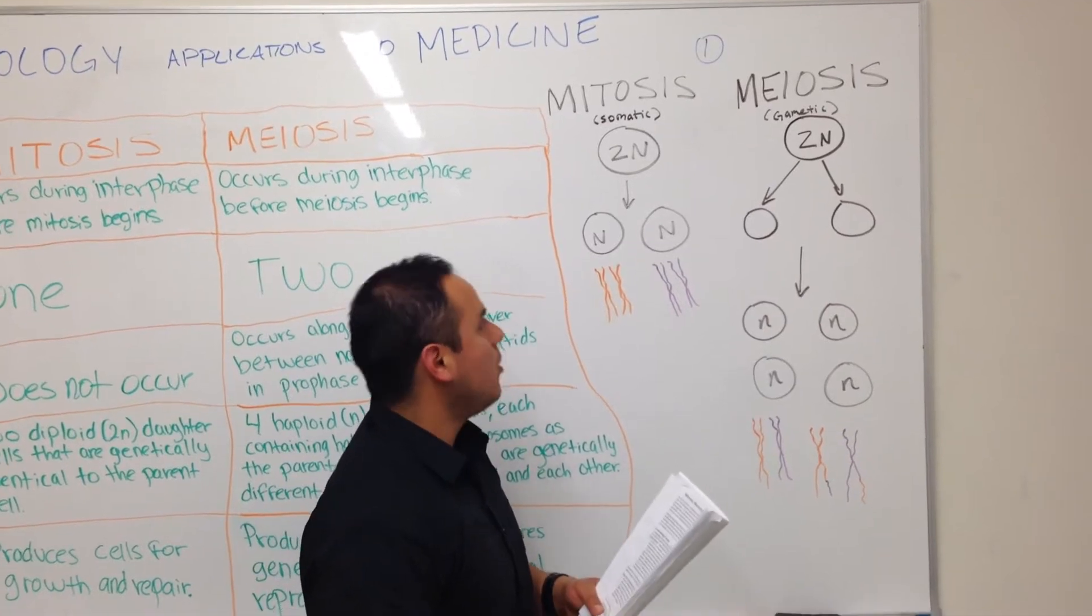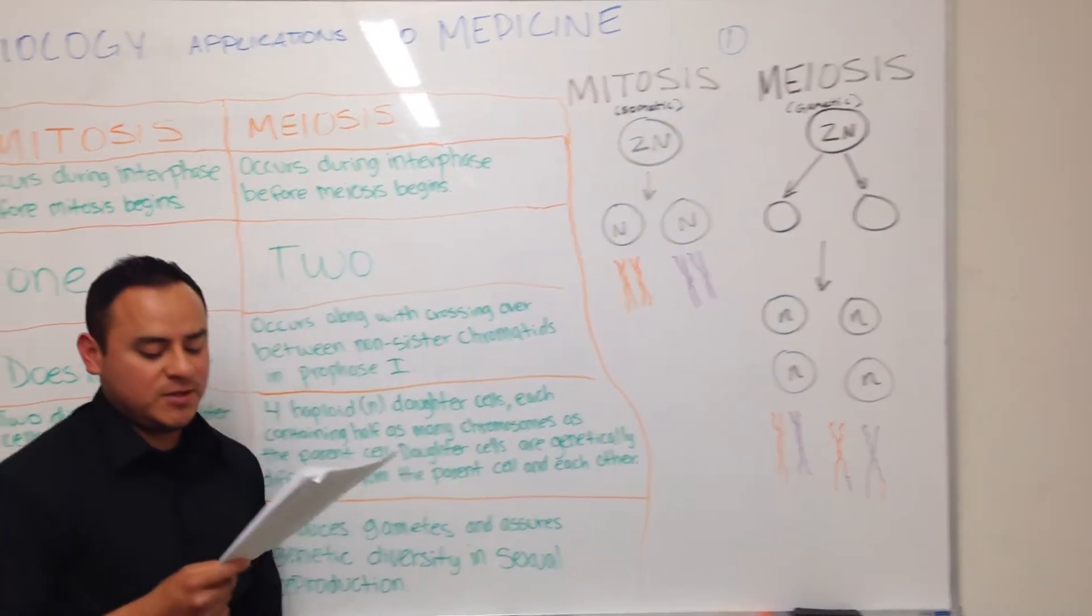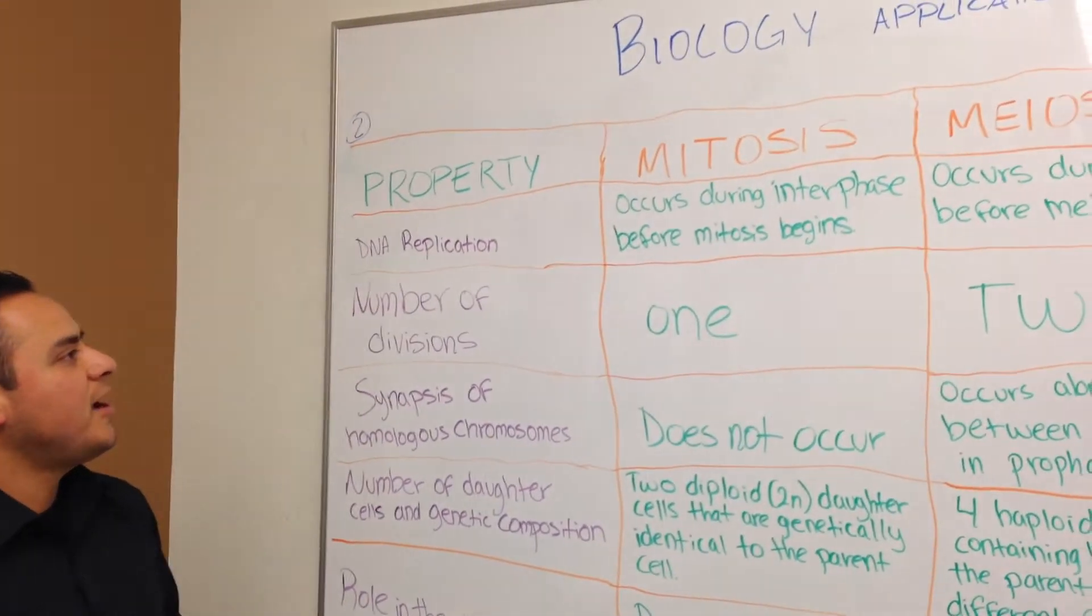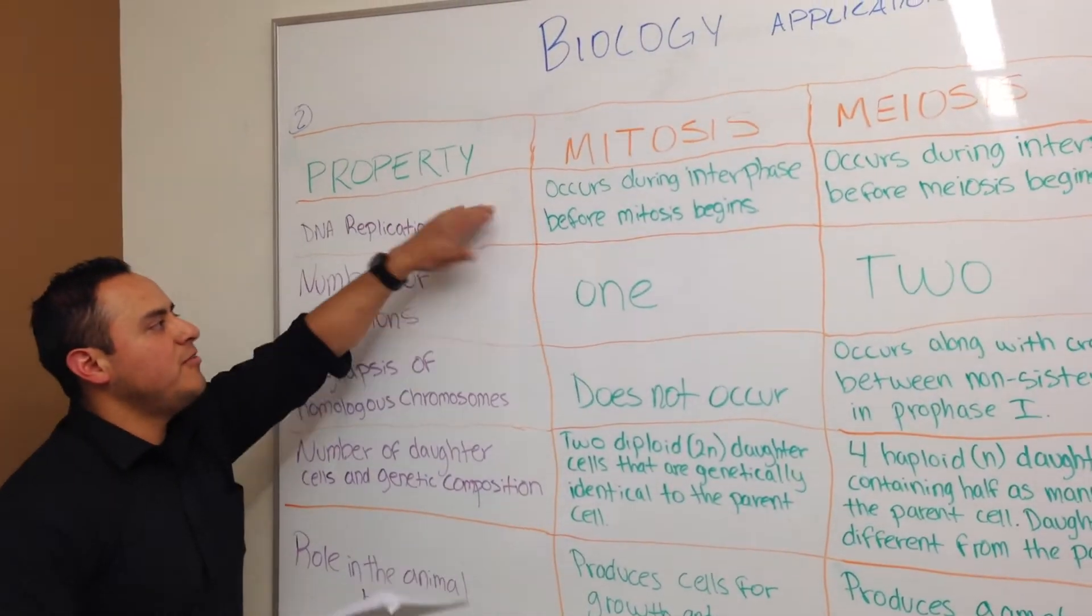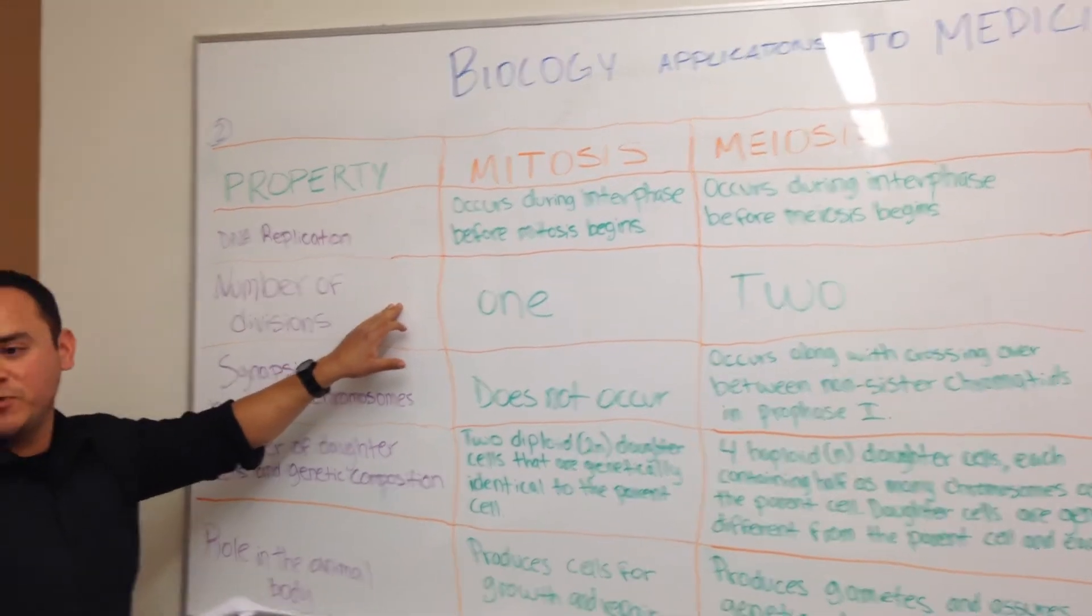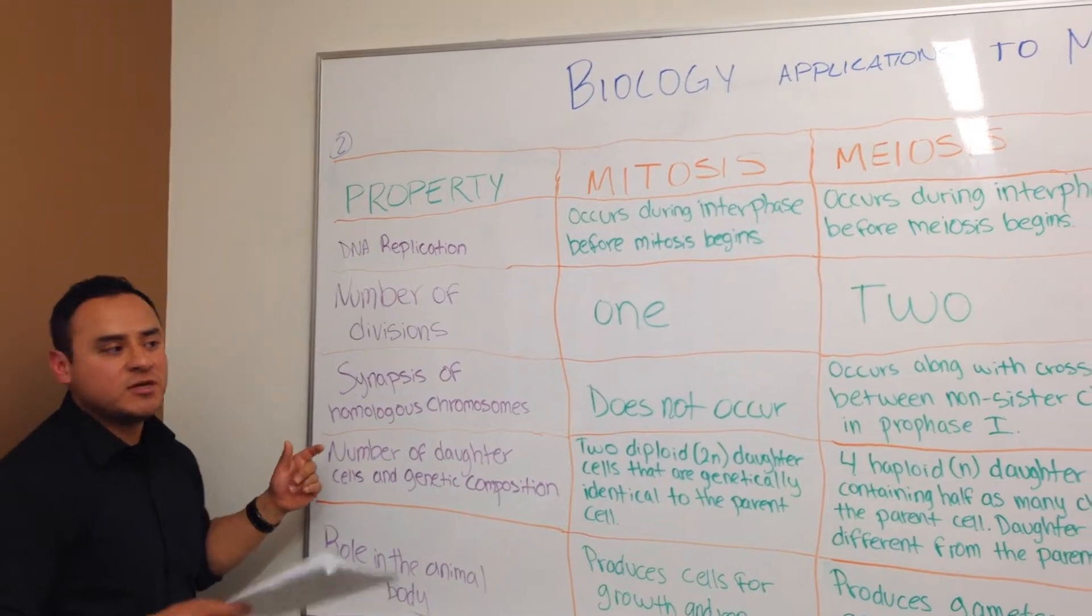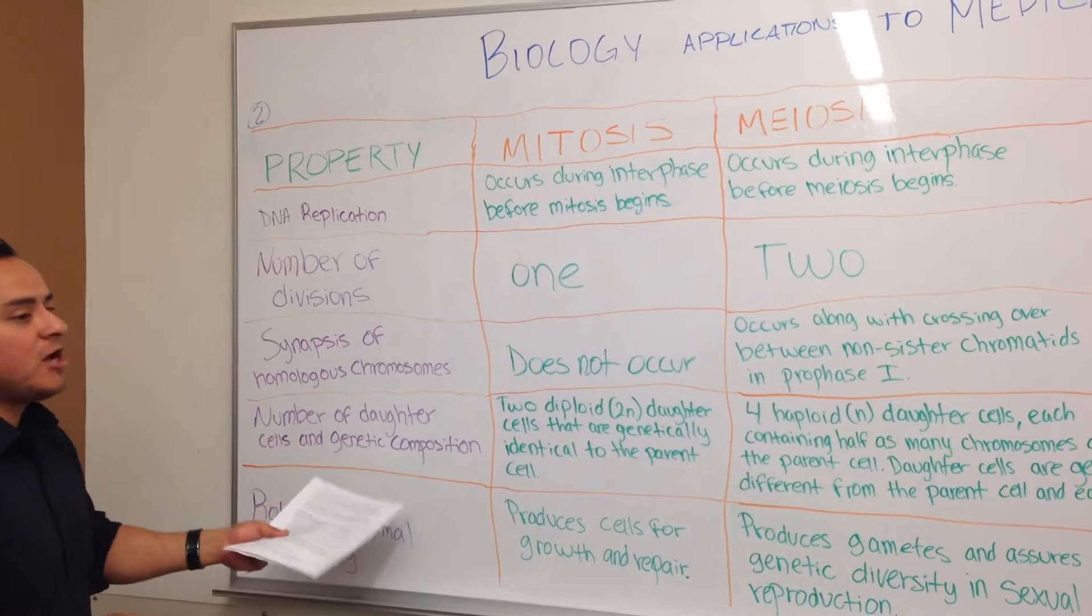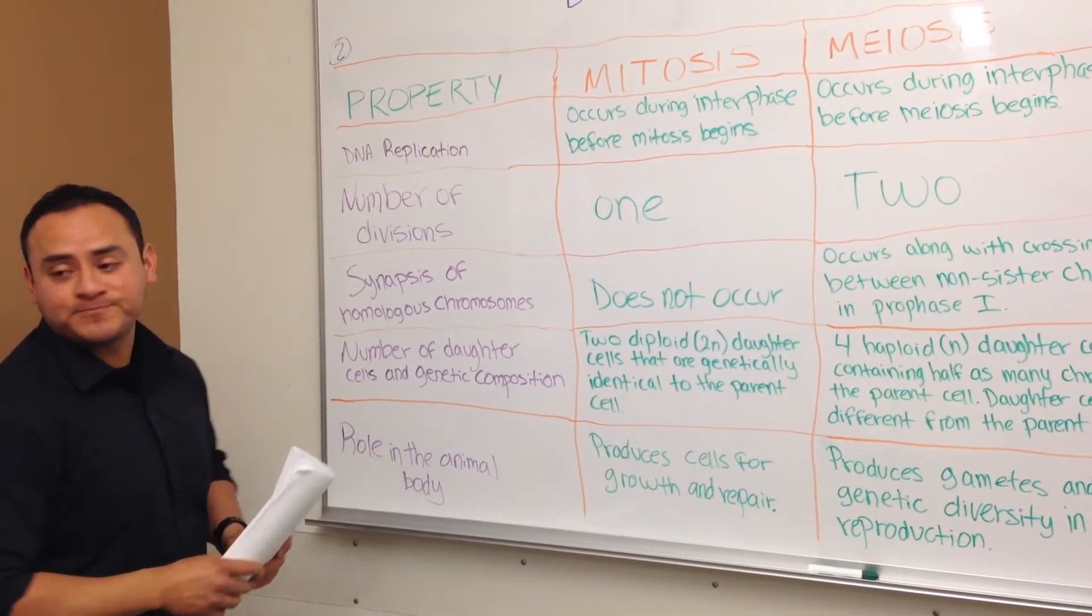And for the next part of the assignment, we are also going to be talking about the similarities and differences between the two. So here we have mitosis in comparison to meiosis. We have the method of DNA replication, the number of divisions within reproduction, then we also have synapses of homologous chromosomes between the two phases, then we also have the number of daughter cells and genetic composition along with role in the animal body.